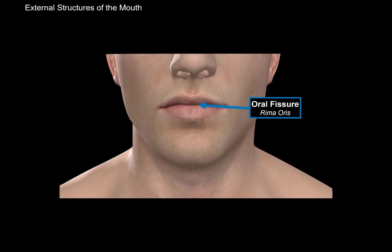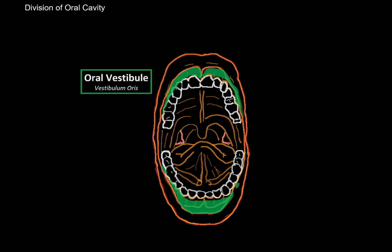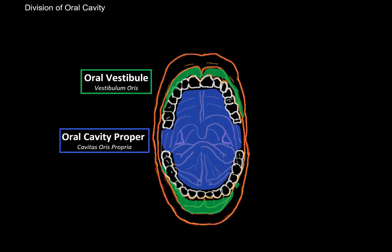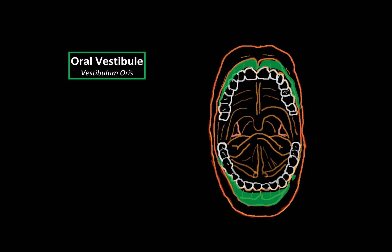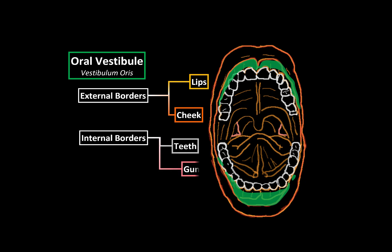And that, my friends, is going to be the opening of our digestive pathway. Now, we generally divide the oral cavity into two parts. There's the oral vestibule, here in green, and the oral cavity proper, here in blue. And the dividing line between these two parts are going to be the teeth and the gums. In this video, we're mainly going to focus on the oral vestibule, by going through the structures associated with the external and the internal borders. The external border of the oral vestibule are going to be the lips and the cheeks, and the internal borders are the teeth and gums.